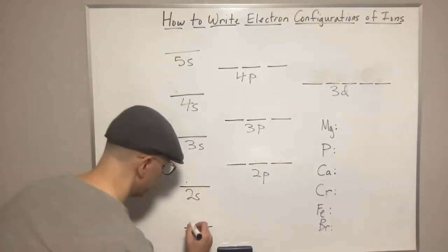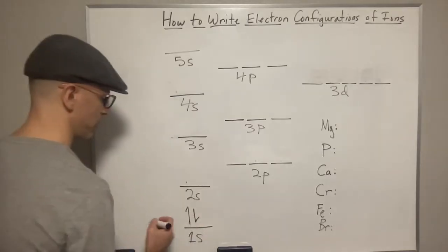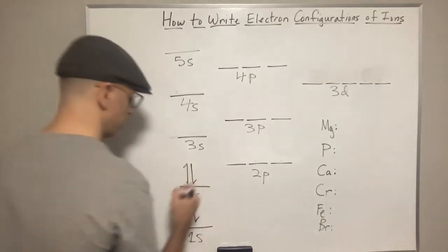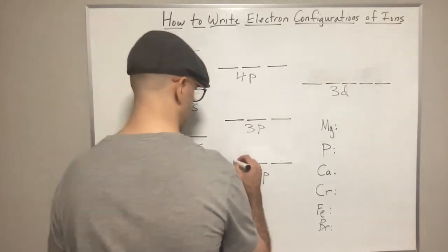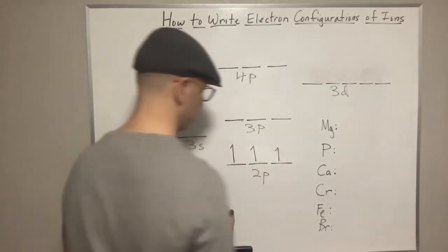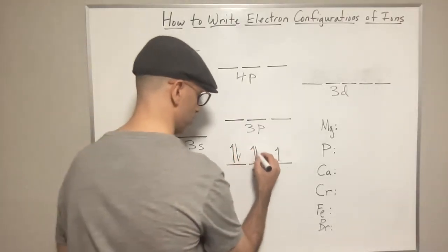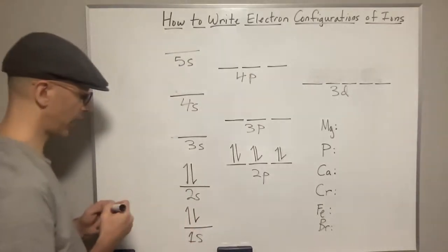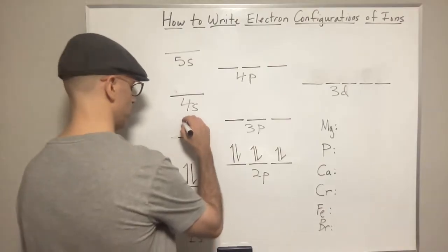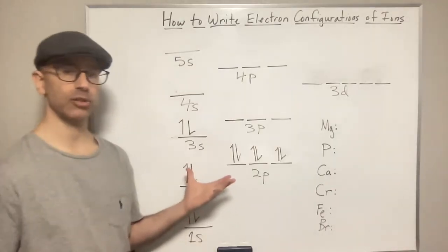So 12 electrons. Starting from low energy: spin up, spin down — 2 in the 1s. Then the 2s gets spin up, spin down. So that's 4. Then I'm going to add 1 at a time to the 2p — spin up, spin up, spin up. There's 3. Then I can start pairing them up — spin down, spin down, spin down. So far that's 10. I need 2 more, so I put spin up and spin down in the 3s. So that's 12 — I have my 12 electrons.